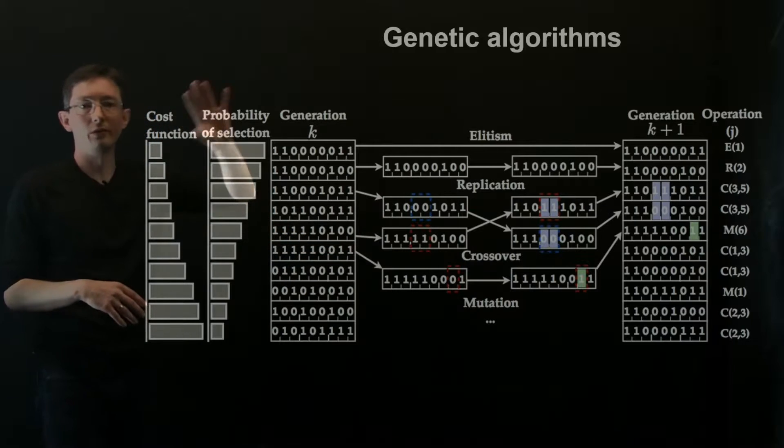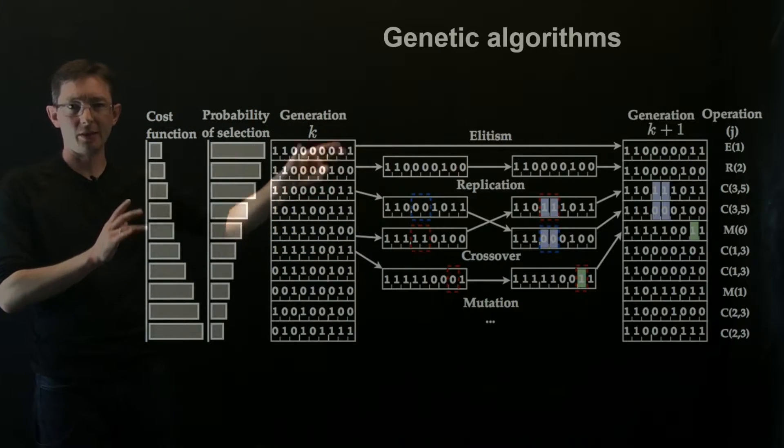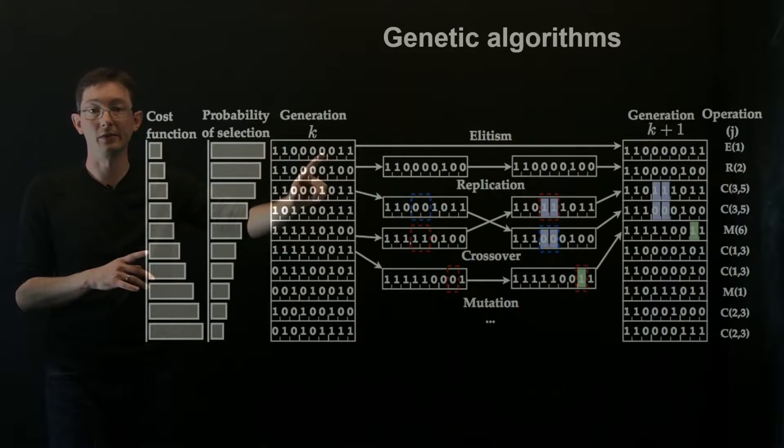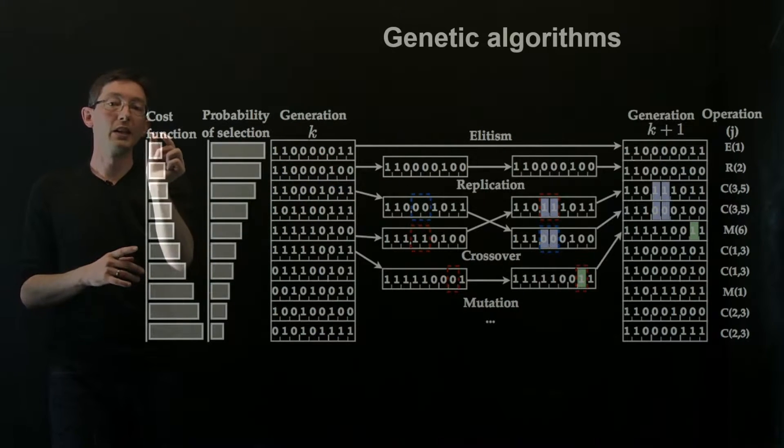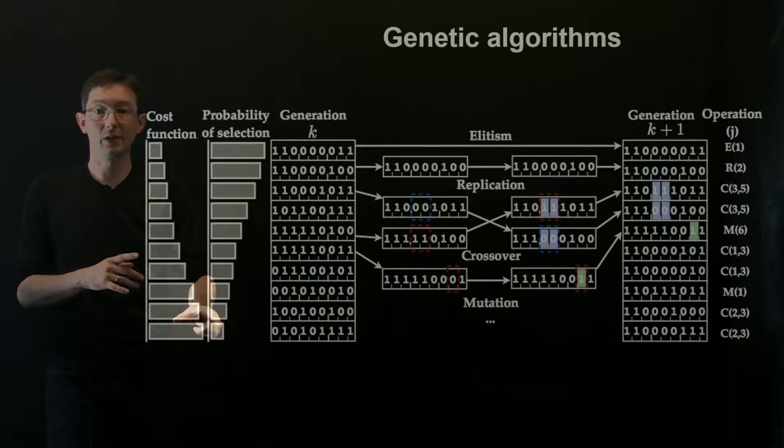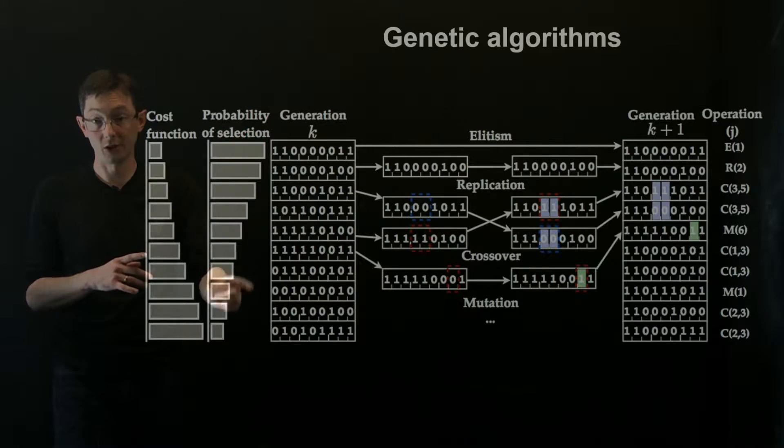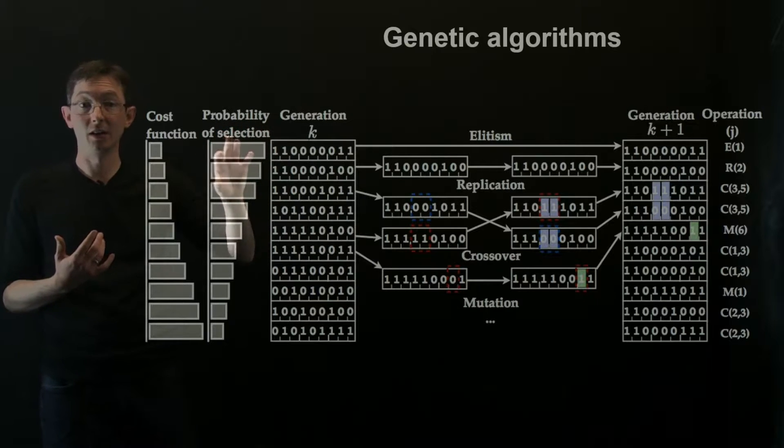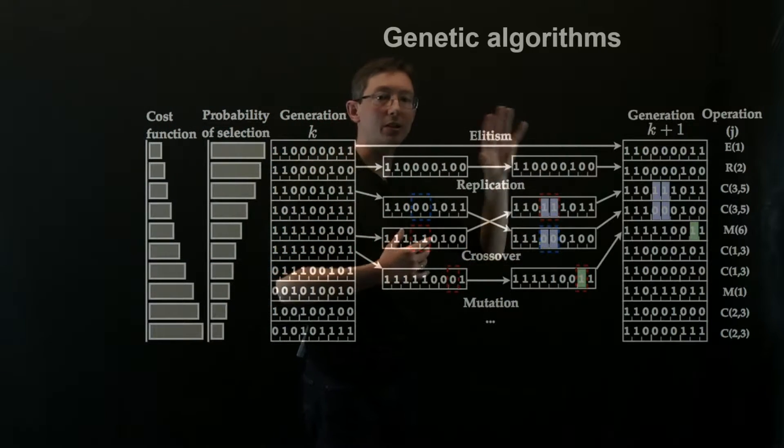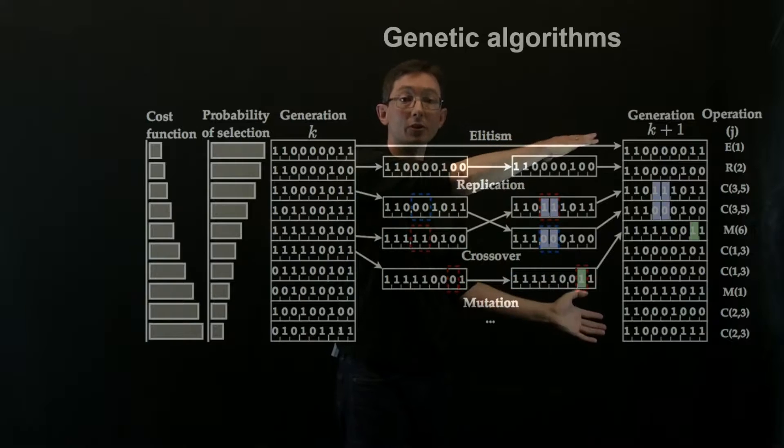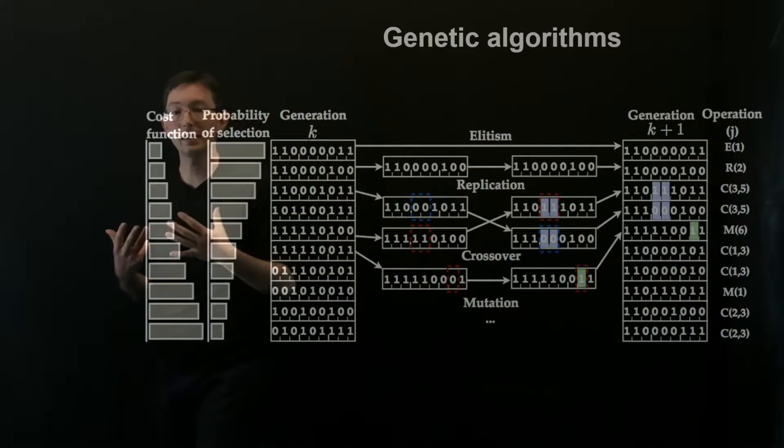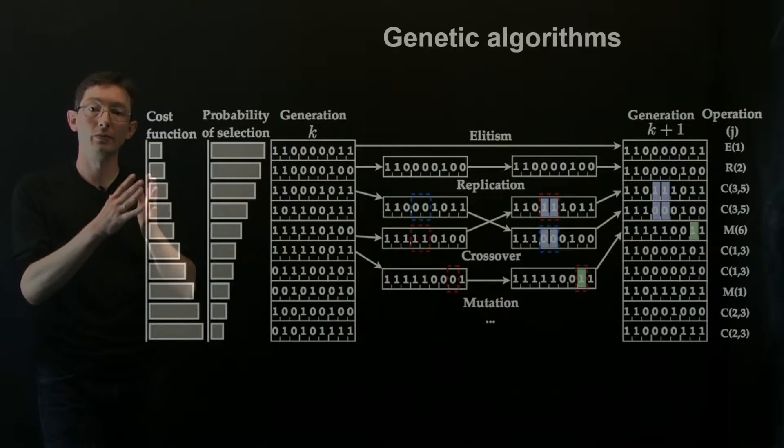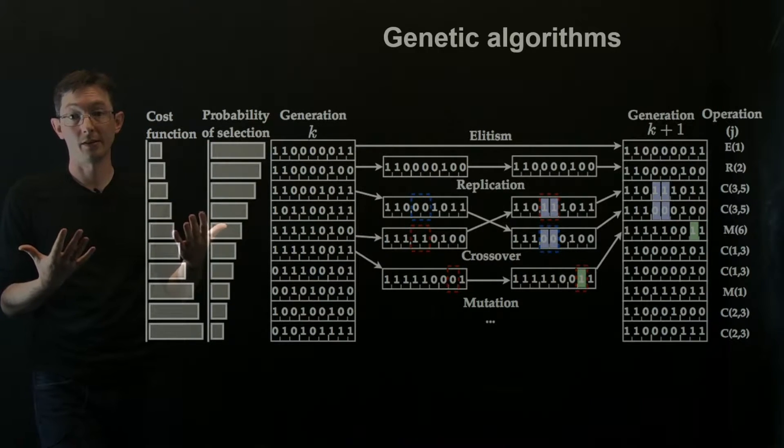Here's the big picture view of genetic algorithms. You have some generation of control laws which are parameterized by a sequence of numbers. Each of those has some performance on a cost function which gives them an associated fitness, which is also related to their probability of selection. There are some genetic operations here that give rise to future generations. And the idea is that this is a targeted optimization that selectively improves from generation to generation to get more and more effective control laws.